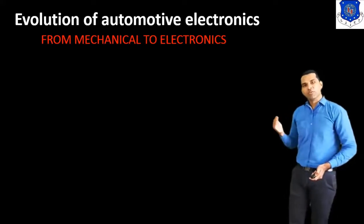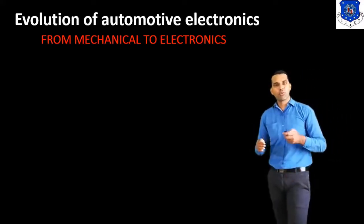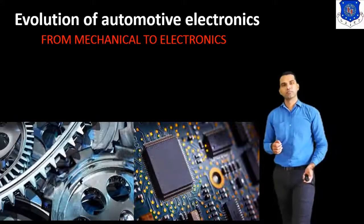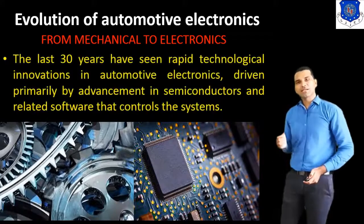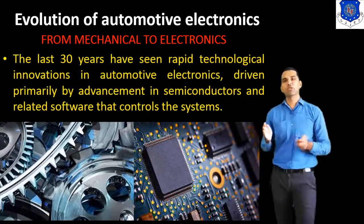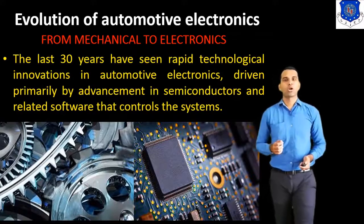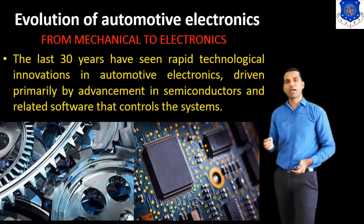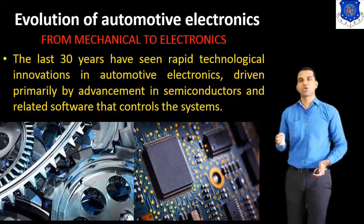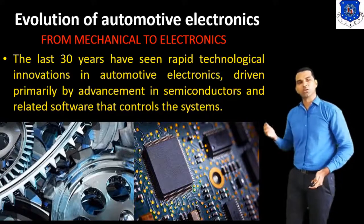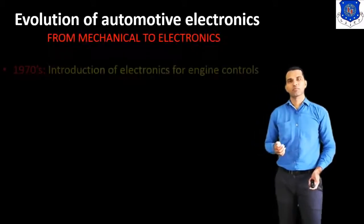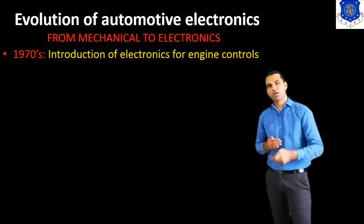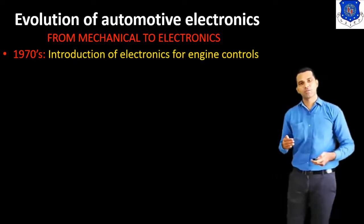Now, we discuss the move from mechanical to electronics. The last 30 years have seen rapid technological invention in automotive electronics, driven primarily by advancements in semiconductors and the related software that control the system. Now, we will discuss the short history of how the evolution of automotive electronics came about.